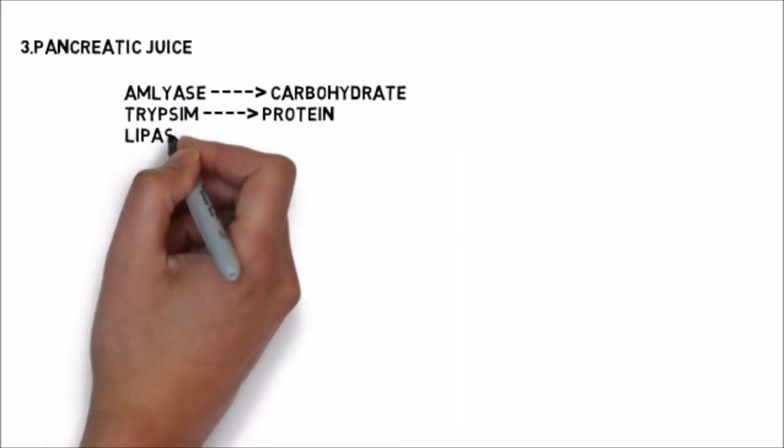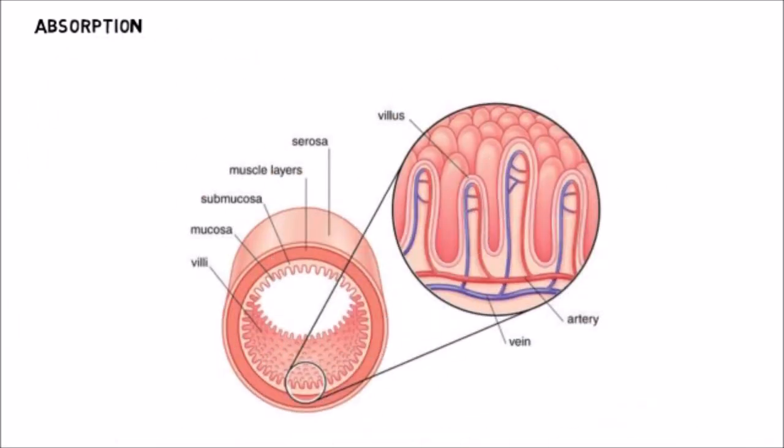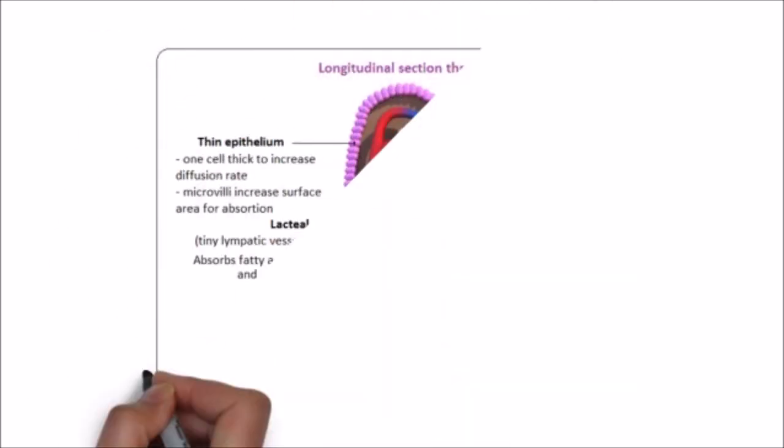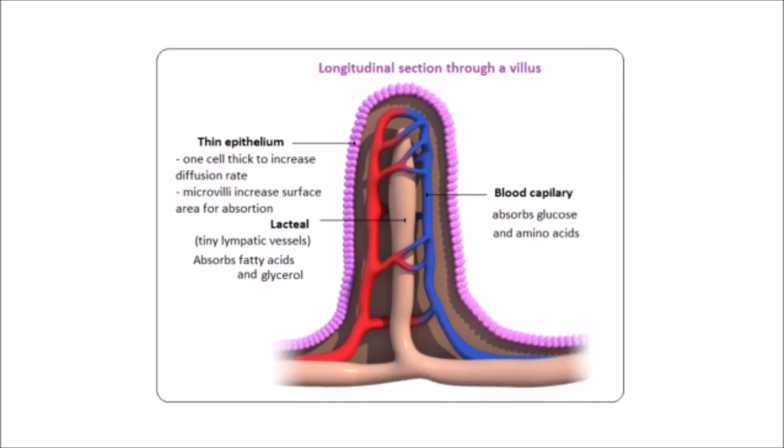After complete digestion of the food in the intestine, the food is absorbed through the intestinal wall. The intestinal wall has finger-like projections called villi, which increase the surface area for absorption. The digested food is absorbed into the blood vessels. Carbohydrates, proteins, and other nutrients are mainly absorbed into the blood, but fat is absorbed through lacteals. Lacteals are small lymph capillaries found in the villi of the small intestine, which absorb fat.